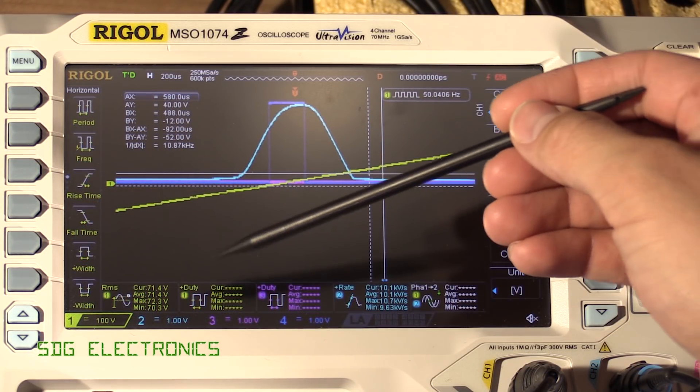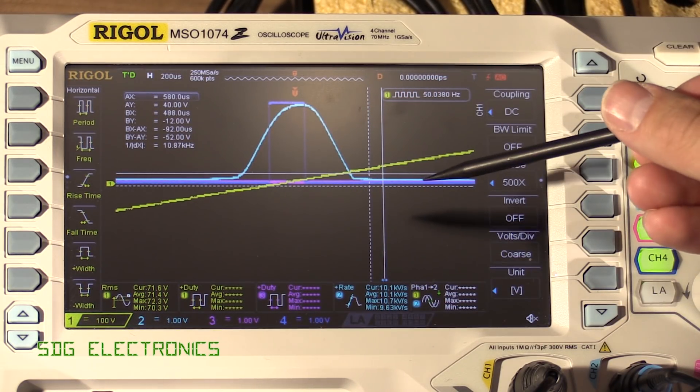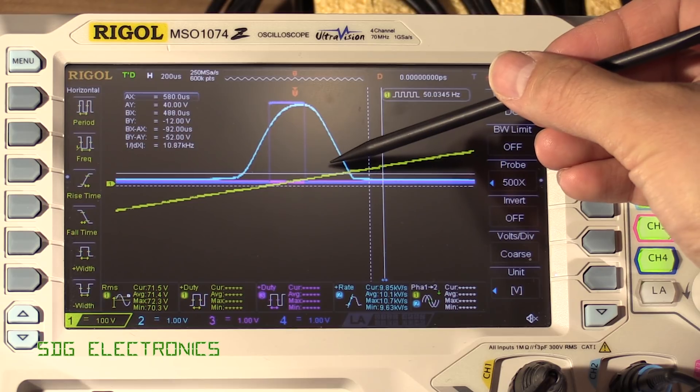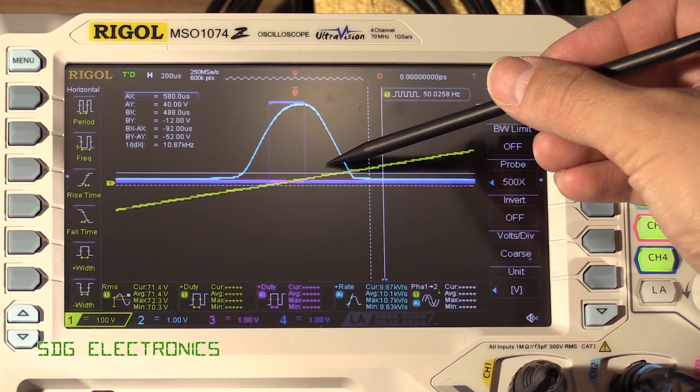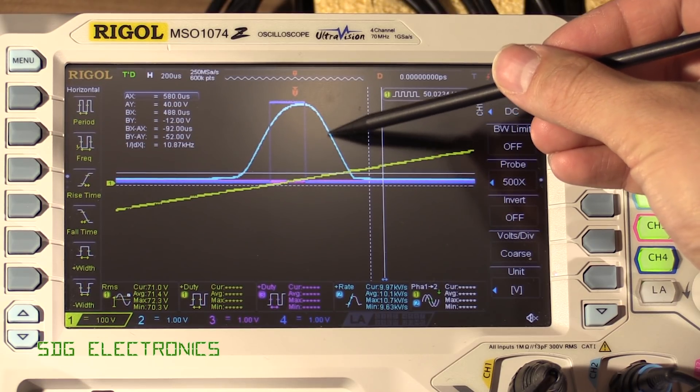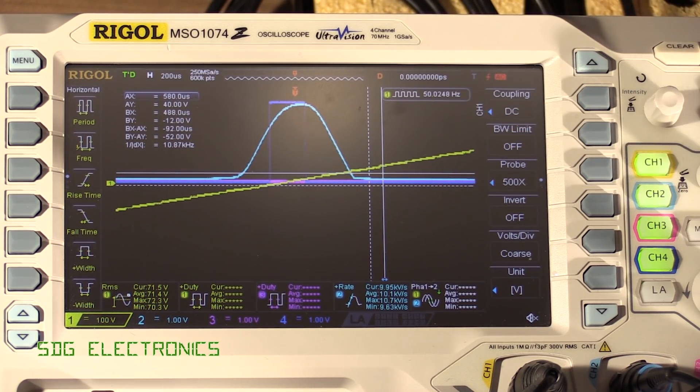And just a quick reminder of the scale so our AC is on channel 1 so 100 volts per division and it's not very clear but one division is at this point here and so you can see at the point where we were probably triggering the gate last time around here we're already at 50 volts so yeah that would have resulted in a relatively high inrush current through those MOSFETs.